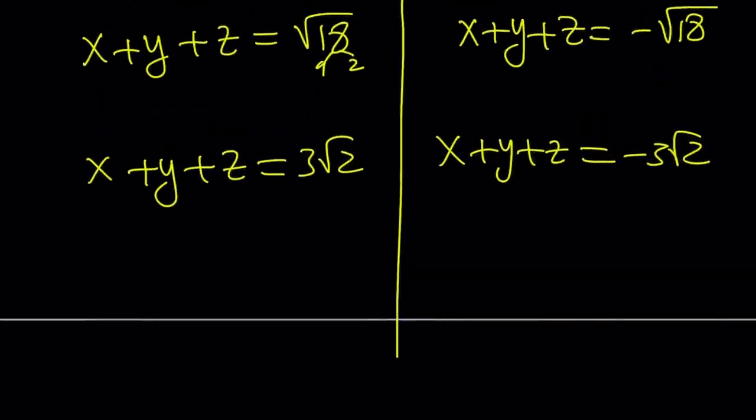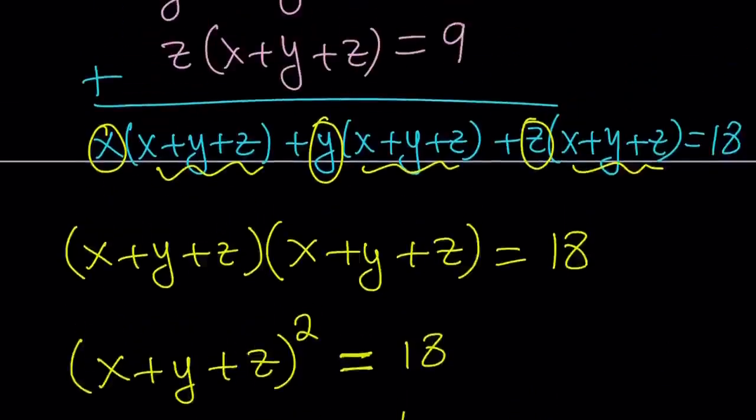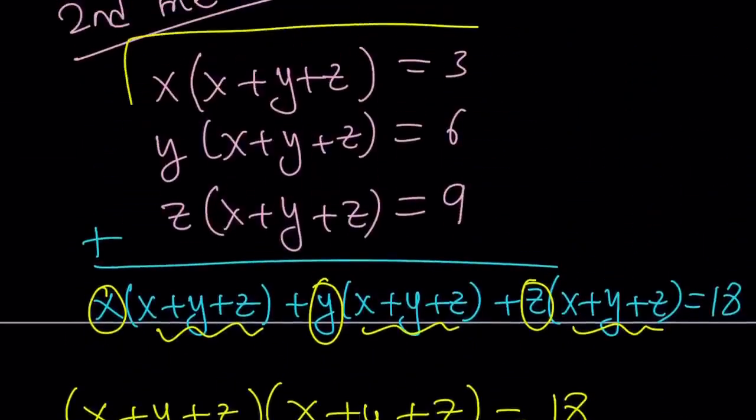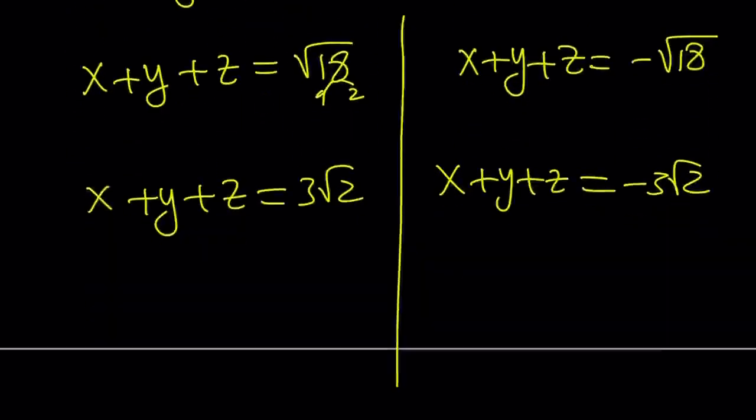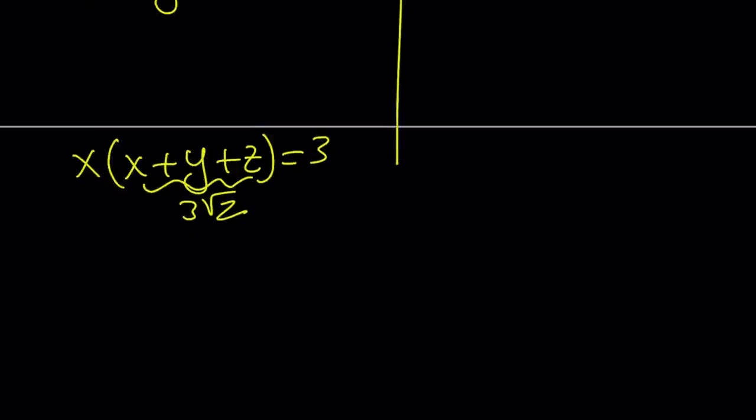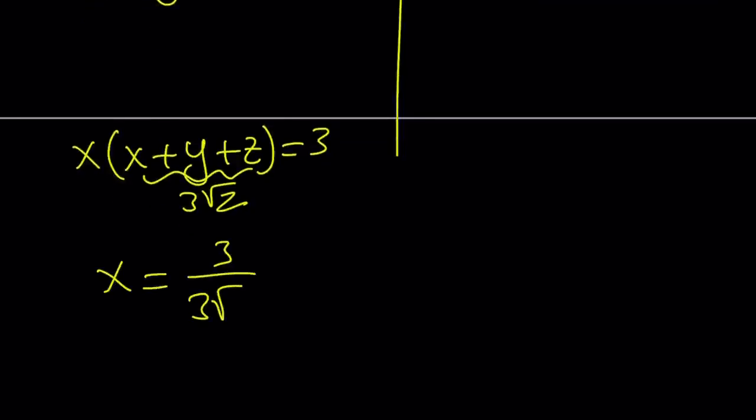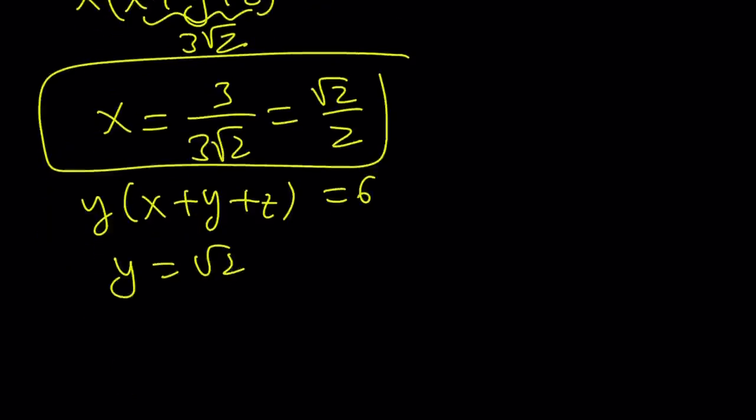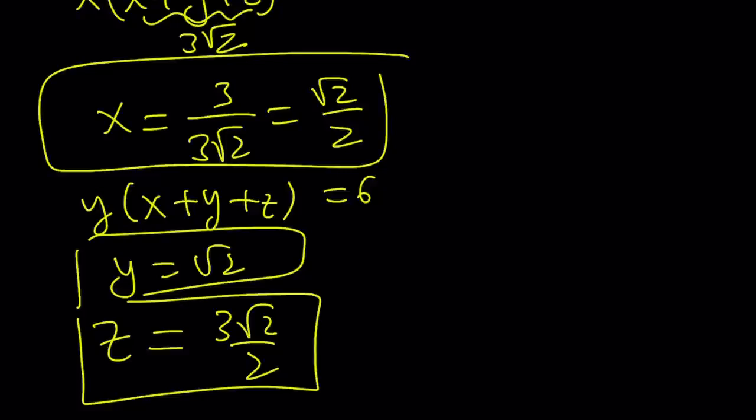So how do you find x, y, z from here, though? I just found their sum. But remember the original problem. It gave us something like this, x times x plus y plus z. So if you consider that, x times x plus y plus z is equal to 3, and I know that this is equal to 3 root 2, so x is just going to be from here, 3 divided by 3 root 2, or 1 over root 2, or root 2 over 2. You get the x value. And by using the second equation, y times x plus y plus z equals 6, you're going to get y equals root 2, same thing, we don't have to go over that again, and for the third one, you're just going to get 3 root 2 over 2.